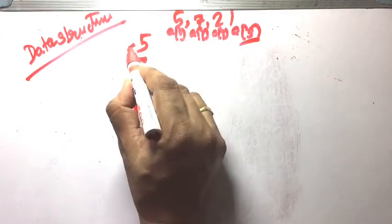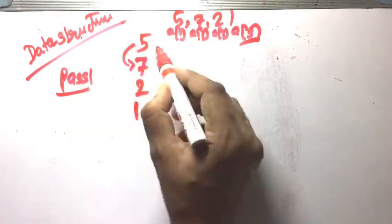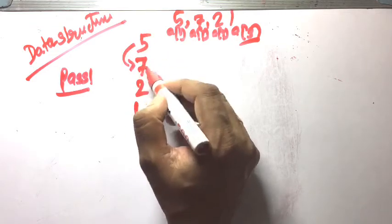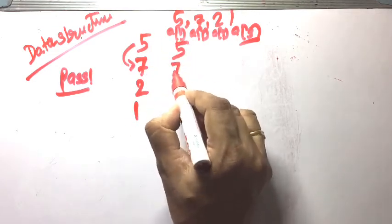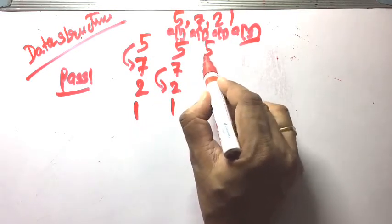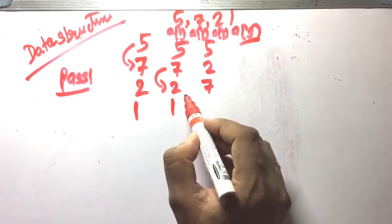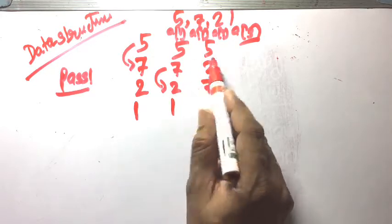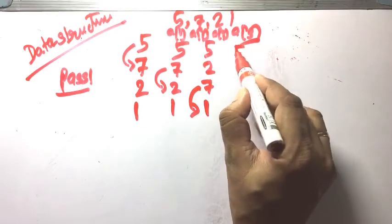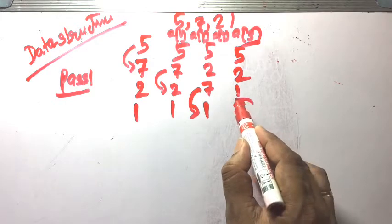Now, in pass 1, 5 is compared to 7. If 5 is greater than 7 then there is a swap, otherwise no swap. Then 7 is compared to 2 — 7 is greater than 2, so swap is required. Next, 7 compared to 1 — 7 is greater than 1, so swap. During pass 1, 7 is sorted.